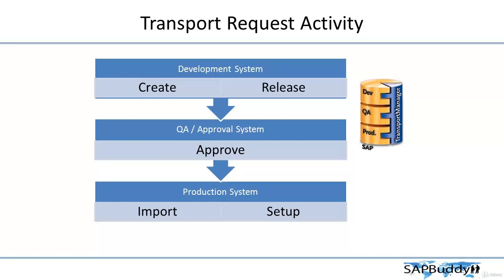Releasing should be restricted to specific people. Once the TR is released, we import it to the QA system. In the QA system it needs to be tested, and once tested, somebody will approve the TR. Once approved, the TMS admin or basis administrator will import it to production. There is also a job function to do the TMS setup. These are all the functions within transport: creating TR, releasing TR, approving TR, importing TR, and setting up the TMS system. These activities can be controlled using SAP standard authorization concepts.